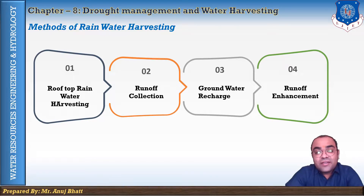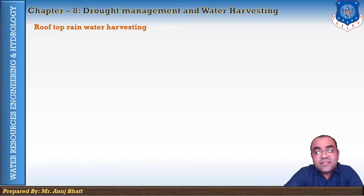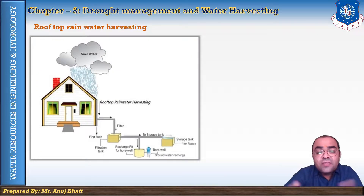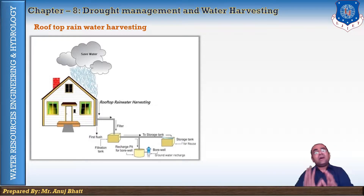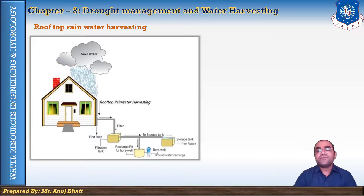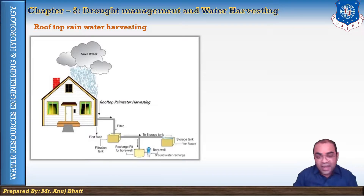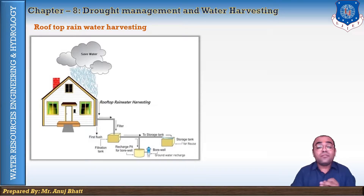Starting with the first method — rooftop rainwater harvesting. In this technique, rainwater is collected from the impervious roof of a building and stored in underground storage tanks, as shown in the figure. The main objective is to make water available for future use. This technique is particularly useful in dryland, hilly, urban, and coastal areas. If the system is properly installed and maintained, clean water can be collected and stored for drinking purposes.